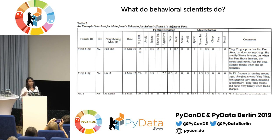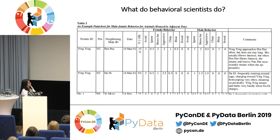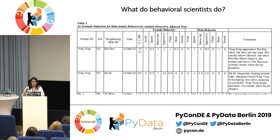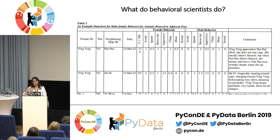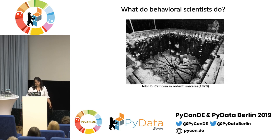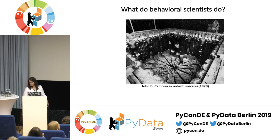For example, they were writing down that one panda was approaching another, and later they would define this as avoidance behavior, or that the animal was ignoring the other. Basically they were watching the pandas and defining their behaviors. Here you see an experimental design from the 1970s — a closed environment with unlimited water and food sources.